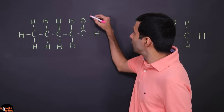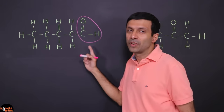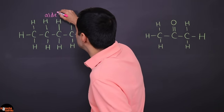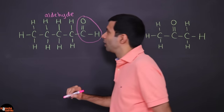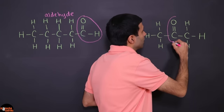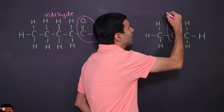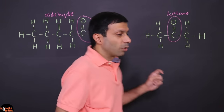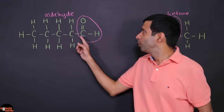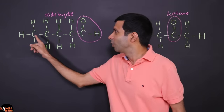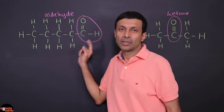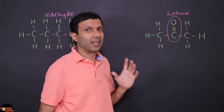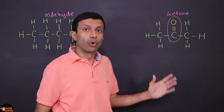Now let's name these two compounds. The first has a C=O with an H at the end — that's an aldehyde. The second has a C=O with carbons on both sides — that's a ketone. The key difference: the aldehyde group is always at the terminal carbon, ending with an H, while the ketone must have at least one carbon on each side of the carbonyl.